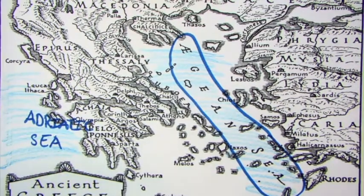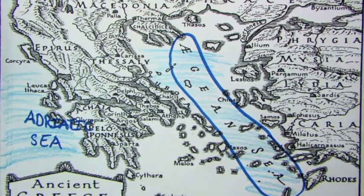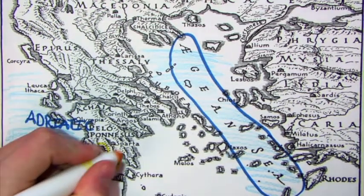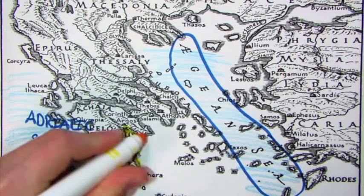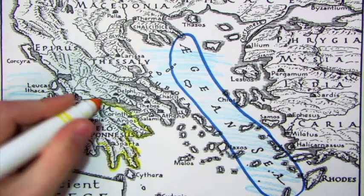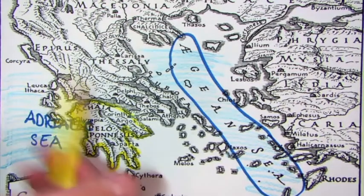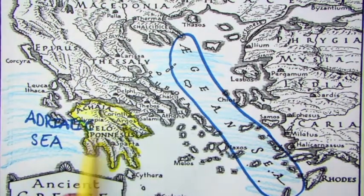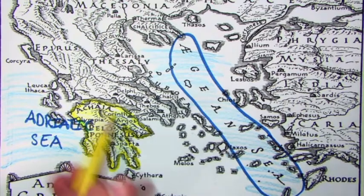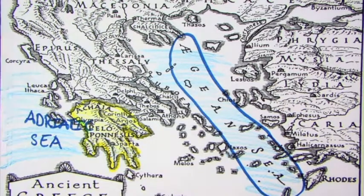And the piece of that is the Peloponnese, in yellow. And northeast of that is Attica, in red.